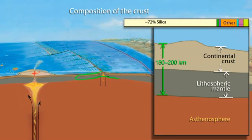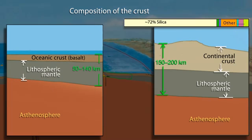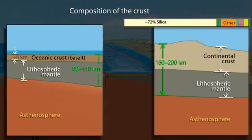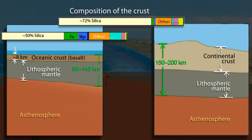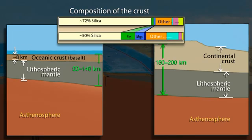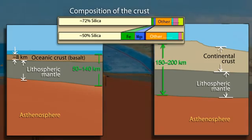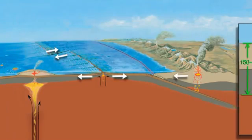Oceanic lithosphere formed at spreading ridges is typically 50 to 140 kilometers thick. Oceanic crust is only around 8 kilometers thick and is denser than continental crust because it contains less low-density silica and more high-density iron and magnesium. Thus, it forms the ocean floor with its top surface below sea level.